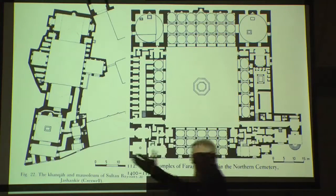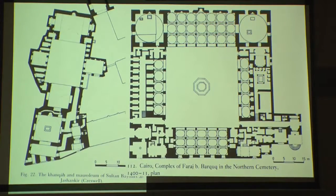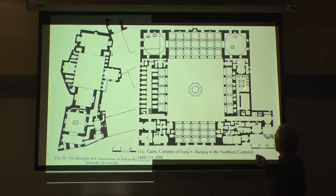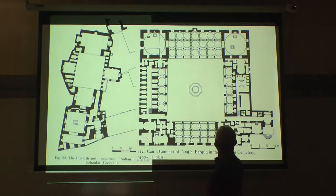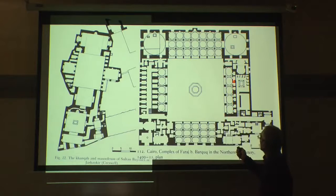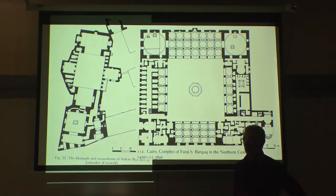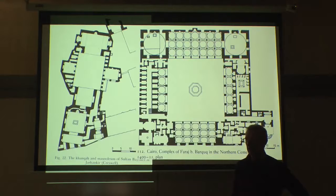What about differences? Four-iwan plan versus hypostyle prayer halls. Flat roof versus vaulted roofs. One has the tomb in the corner, which is unusual. In fact there are two tombs here — one for the male members of the family, one for the female members, separated in that way. Street alignment versus no street alignment — that's very important. The fact that it was built in the desert meant they didn't have to worry about street alignment, which also meant the mausoleum could be next to the Qibla wall, whereas in the other case it's opposite the Qibla wall.